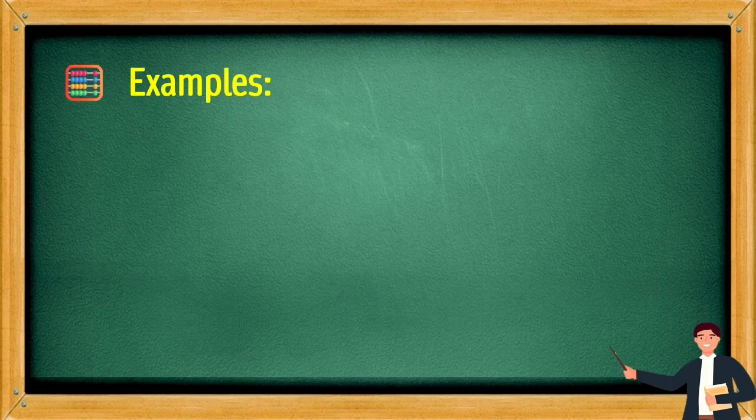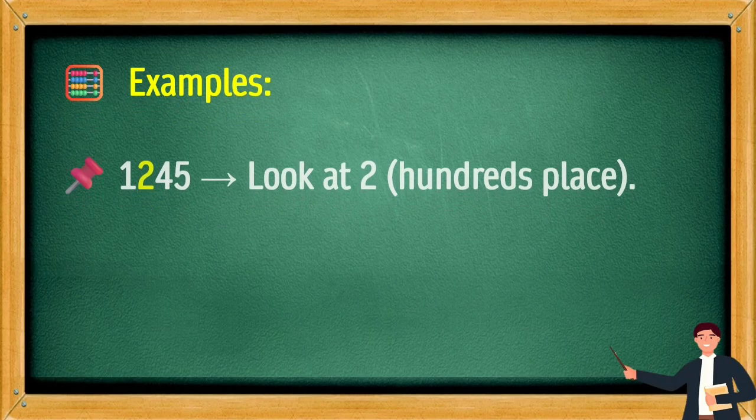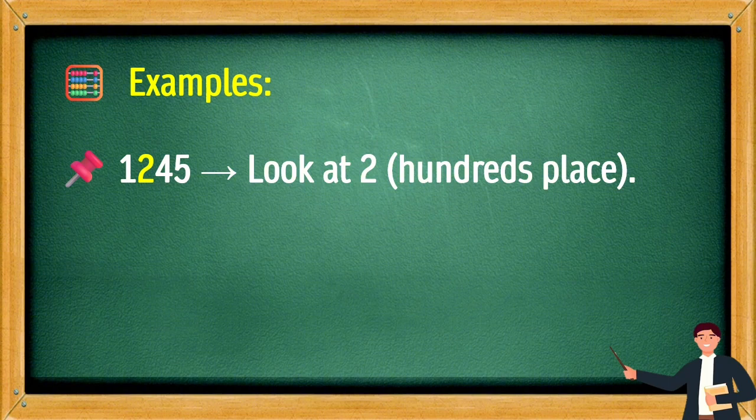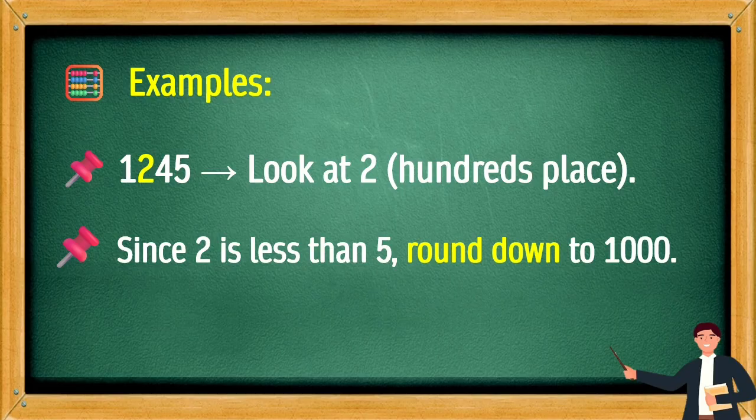Another example: 1,245. Look at number 2 in the hundreds place. Since 2 is less than 5, round down to 1,000.